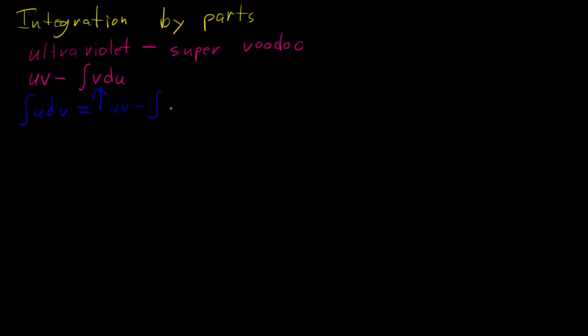The next thing we want to look at is integration by parts. When all of your other tools for solving these fail, usually integration by parts is the way to go. There is a mnemonic for this as well. And that mnemonic is ultraviolet minus super voodoo. What this means is u v minus super is our big S for the integral, v du. Ultraviolet minus super voodoo. If I have an integral that looks like u dv, that is equal to u v minus the integral of v du.